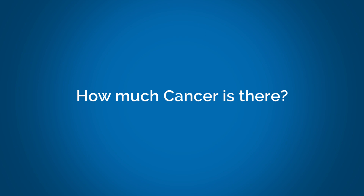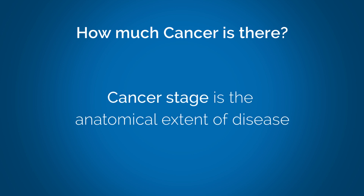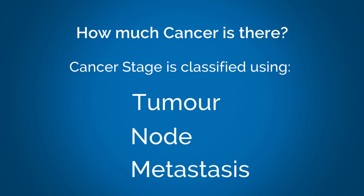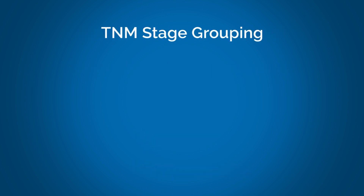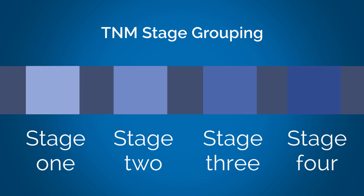How much cancer is there? To determine how much cancer there is, cancer must be staged. Cancer stage is the anatomical extent of disease. Cancer stage is classified using the tumor node metastasis system, known as the TNM classification system. The tumor classification is then summarized as a stage group and is typically given a number from 1 to 4 using the Roman numerals I,